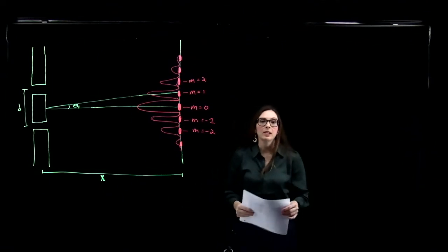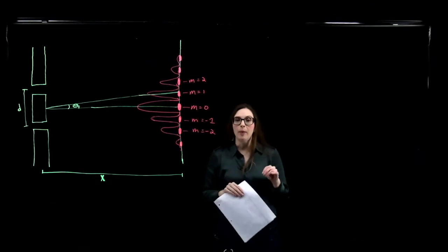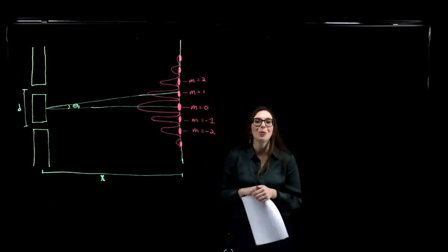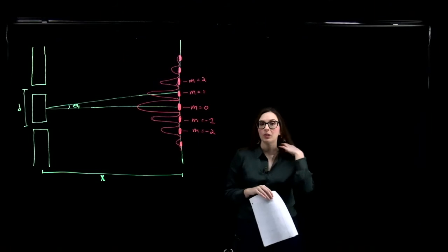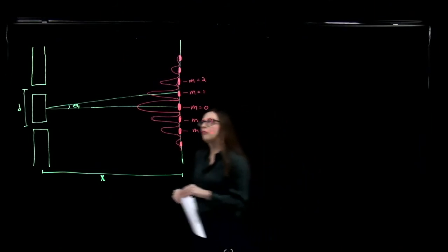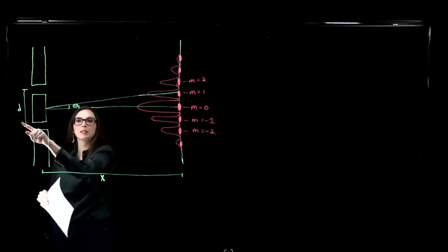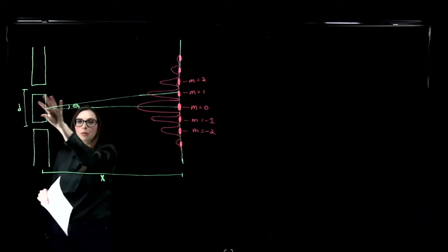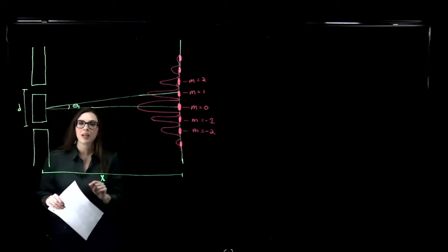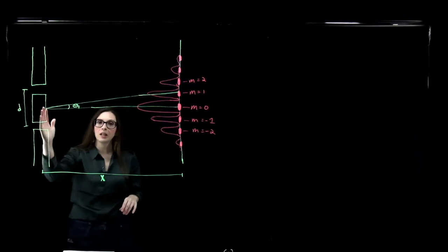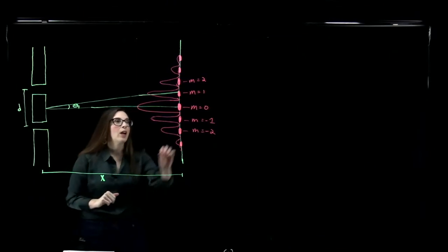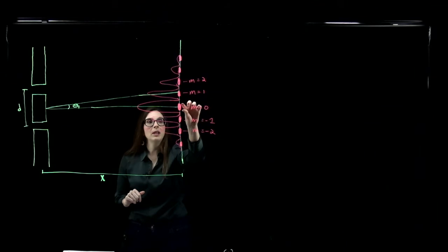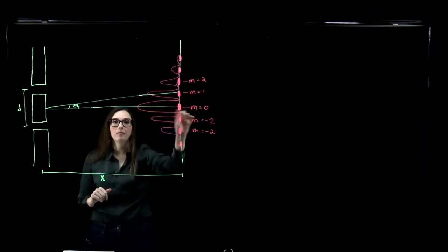Here I've drawn our double slit experiment, and we're going to talk about how we can get at some other important quantities from this experiment just by knowing the geometry of our system, using some approximations. Here we have our double slit - the distance between my two slits where the light's coming through and diffracting is little d, and the distance between my slits and my screen where the diffraction pattern appears is distance x. Then I've got my central bright fringe in the middle, and all of my other higher-order bright fringes on either side.